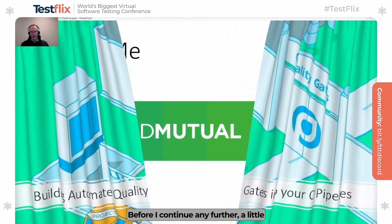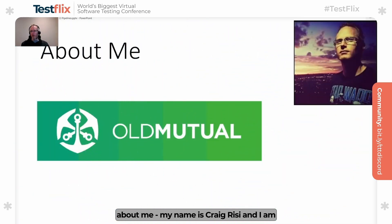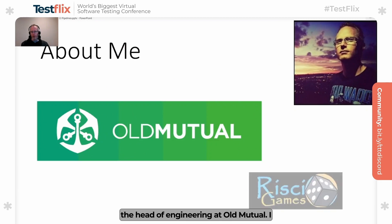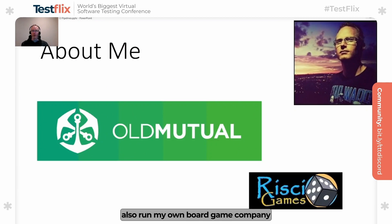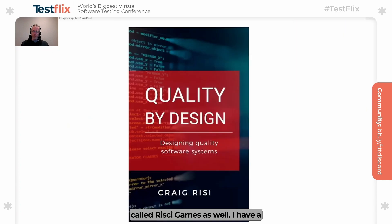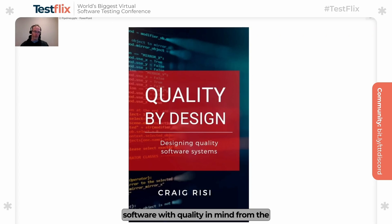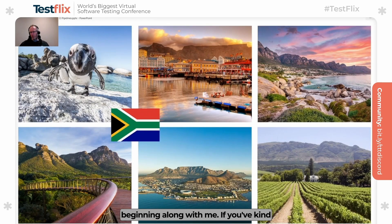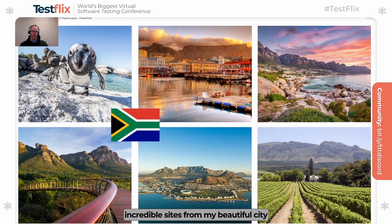But before I continue any further, a little bit about me. My name is Craig Reesie, and I am the head of engineering at Old Mutual. I also run my own board game company called Risky Games. I have a book out called Quality by Design, where you can get a lot more about how you can design software with quality in mind from the beginning. If you're trying to figure out my accent, I'm from Cape Town, South Africa, and these are just some incredible sights from my beautiful city, which I hope you'll come visit one day if you've never been.